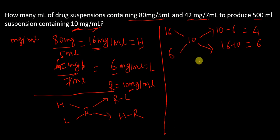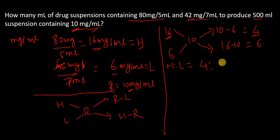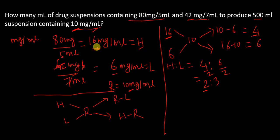The ratio of higher to lower is 4 is to 6. Dividing both by 2 gives 2 is to 3. So we need 2 parts of the higher concentration solution (16mg per ml) and 3 parts of the lower concentration solution (6mg per ml) to prepare 500ml of 10mg per ml suspension.